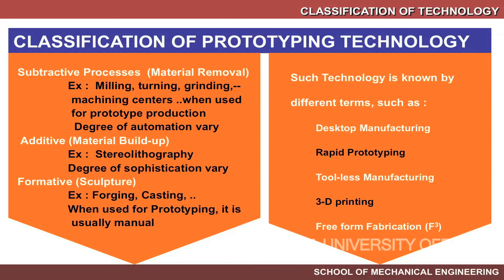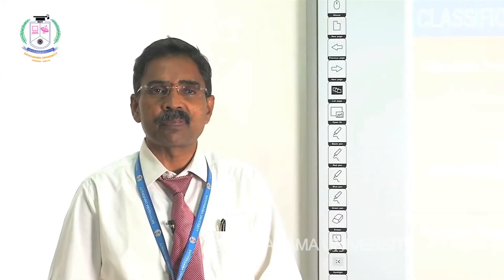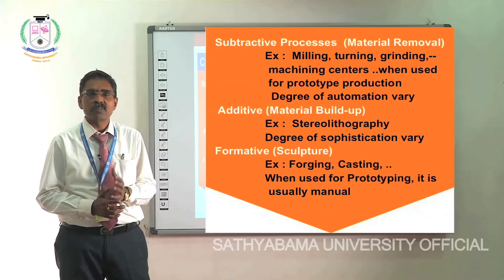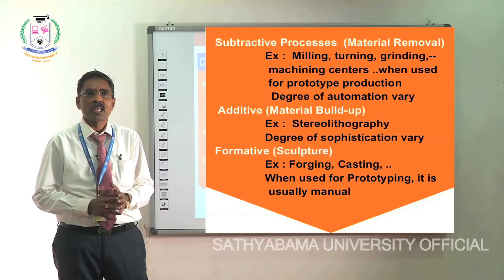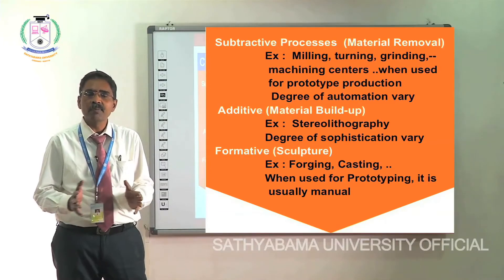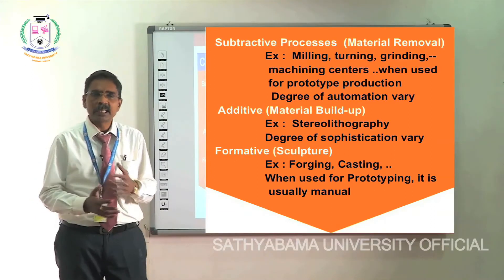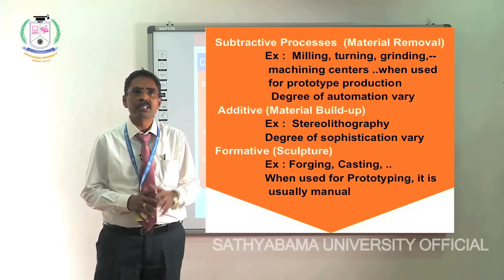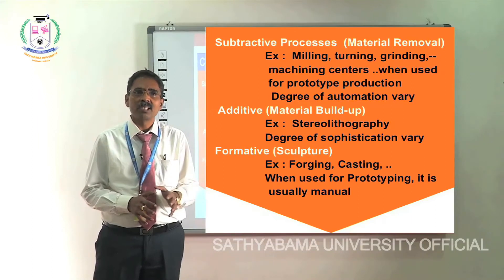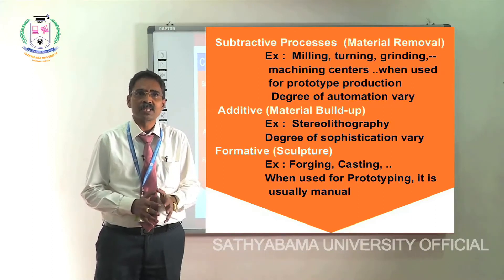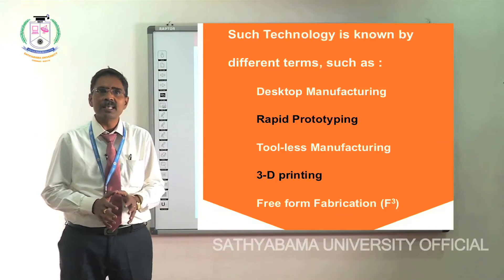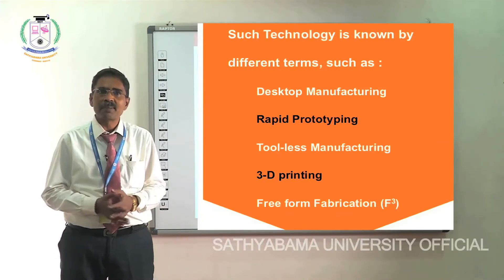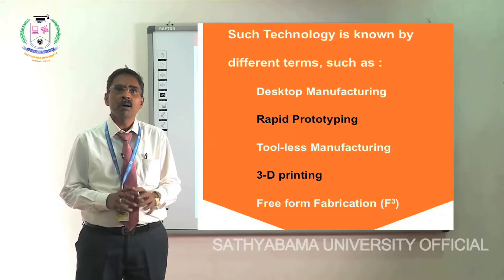The technology is classified into three types: first, the subtractive process — material removal; second, the additive process — where material is built up to get the required component; third, the formative process — material removed by sculpture method. These three technologies collectively are called desktop manufacturing, rapid prototyping, toolless manufacturing, 3D printing, or freeform fabrication.